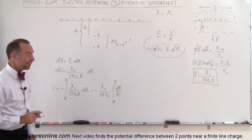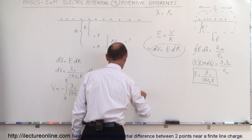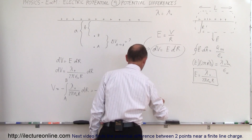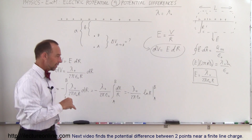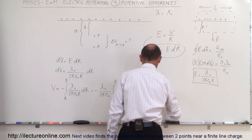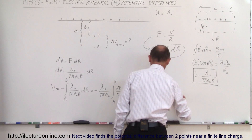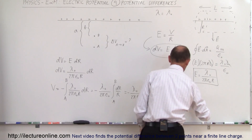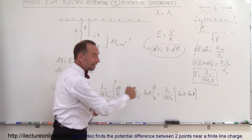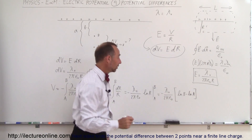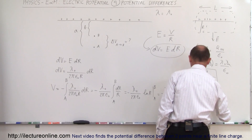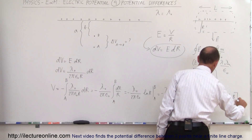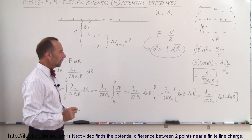Taking the constants out, this becomes minus lambda sub-naught divided by 2 pi epsilon sub-naught, times the integral from A to B of dR over R. That's an easy integral — it's simply the natural log of R. So this becomes minus lambda sub-naught divided by 2 pi epsilon sub-naught, times the natural log of R evaluated from A to B. Plugging in the upper limit and subtracting the lower limit gives us minus lambda sub-naught divided by 2 pi epsilon sub-naught, times the quantity natural log of B minus natural log of A.